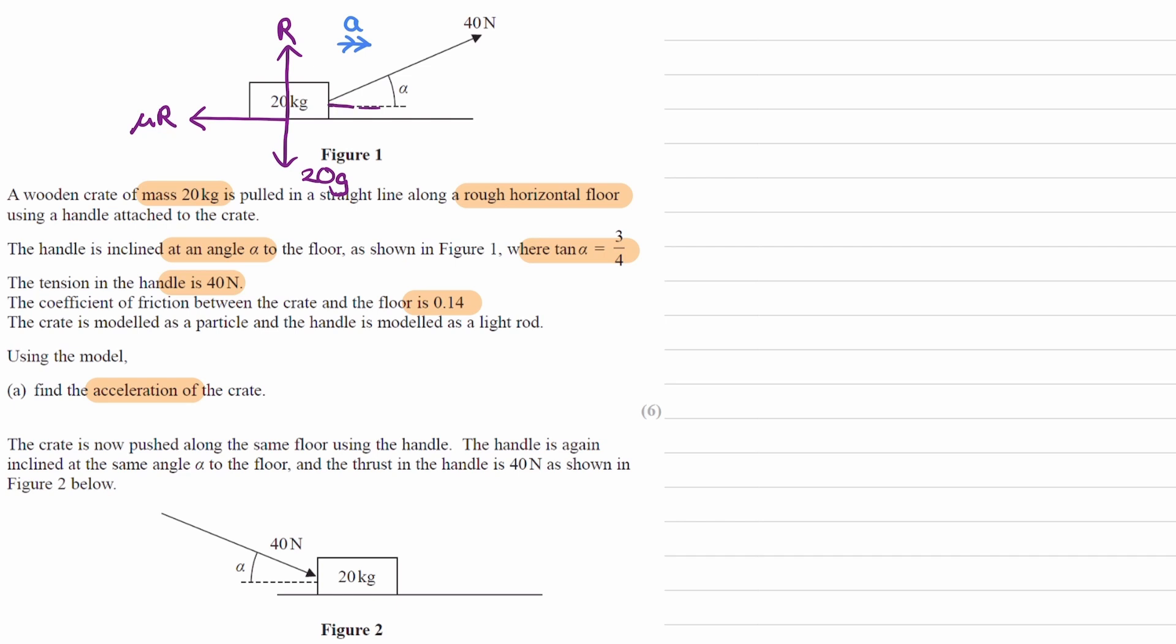We can then resolve the 40 newton force vertically and horizontally. Using SOHCAHTOA, this would be 40 sin alpha and this would be 40 cos alpha. 40 cos alpha acts towards the right and the 40 sin alpha acts upwards. They flow between the same two points as the 40 newton force does.